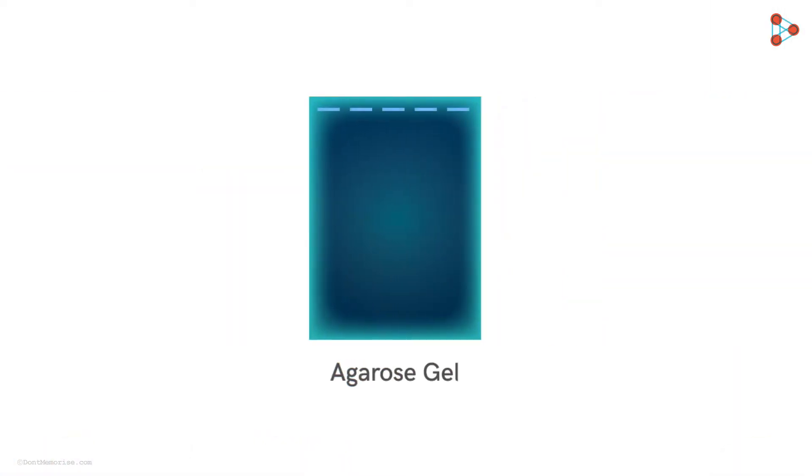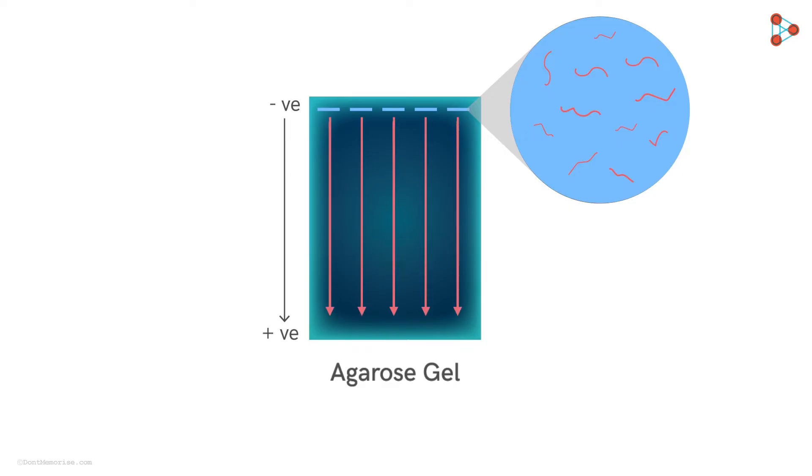Same is the case with DNA fragments. When our DNA sample containing various sized fragments is loaded onto a gel, then the charge applied across the gel helps in the mobility of these fragments. However, not all fragments move at the same pace. Those which are smaller move ahead, and those which are larger in size find it difficult to move.